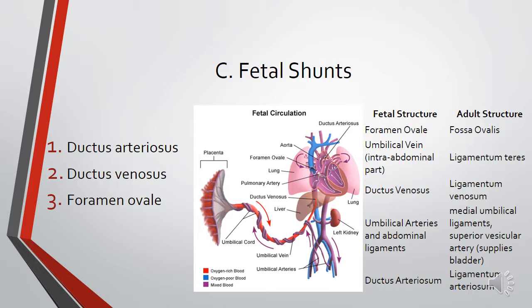After the baby is born, these structures close and transition into adult structures. The foramen ovale becomes the fossa ovalis, the umbilical vein becomes a ligament, the ductus venosus becomes a ligament, the umbilical arteries become abdominal ligaments, and the ductus arteriosus becomes the ligamentum arteriosum.